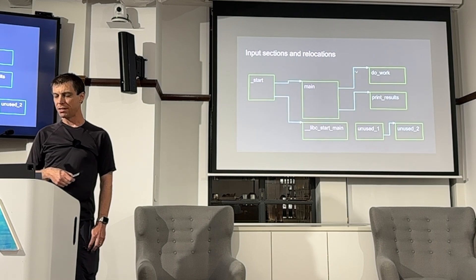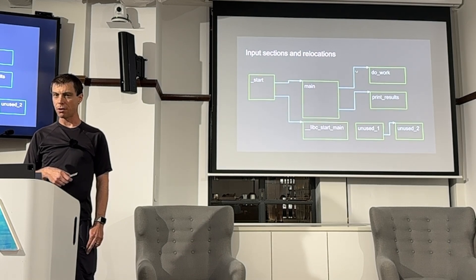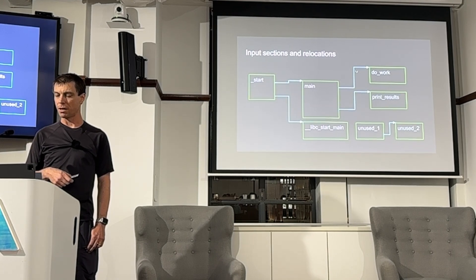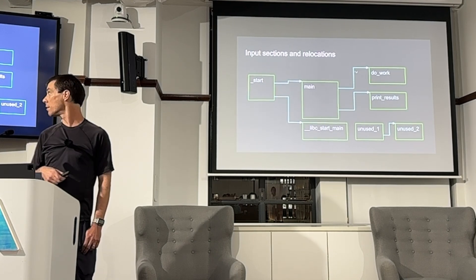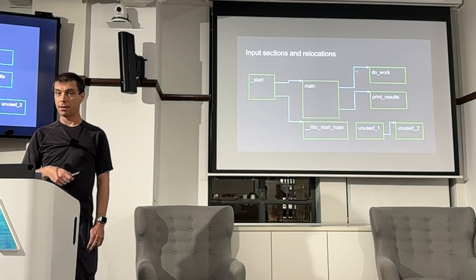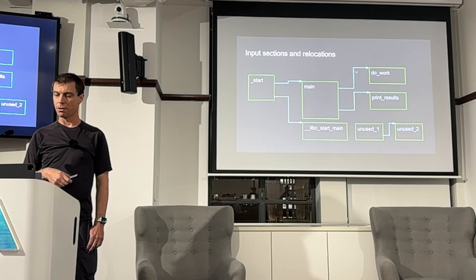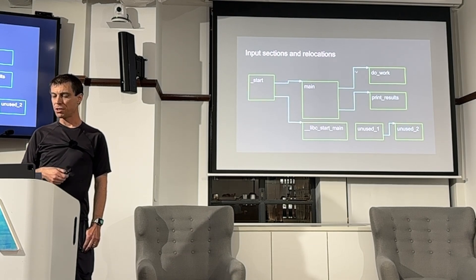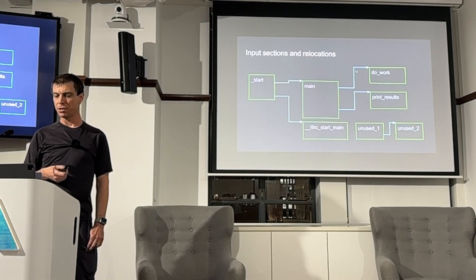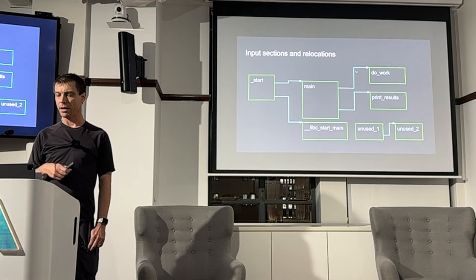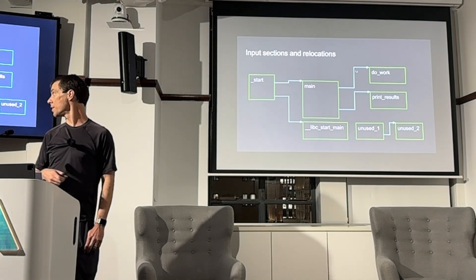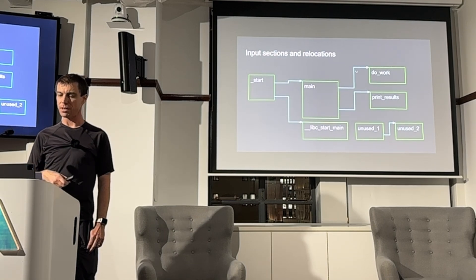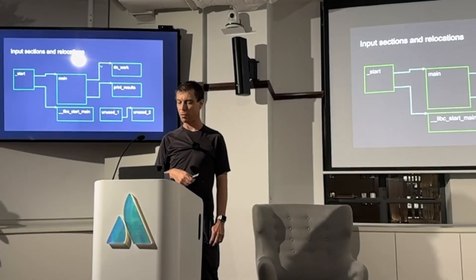Each input file is composed of many sections. Depending on compiler settings, these sections can contain many functions or variables. More commonly these days, there's one function or one variable per section. This allows the linker to perform a garbage collection phase, where it starts from the entry point to your program and traverses the graph to find out what is and isn't used.